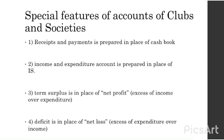In a normal business we prepare a cash book, but in clubs and society we prepare receipts and payments instead of a cash book. Then an income and expenditure account is prepared in place of the income statement. The income and expenditure account records income and expenses. The term surplus is used in place of net profit — surplus means an excess of income over expenditure.